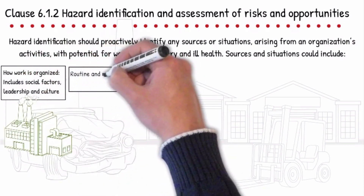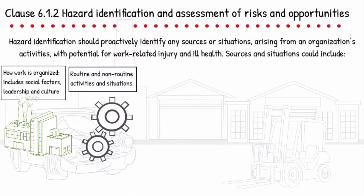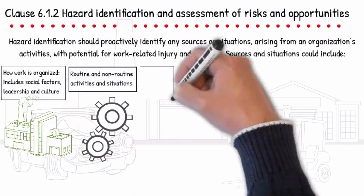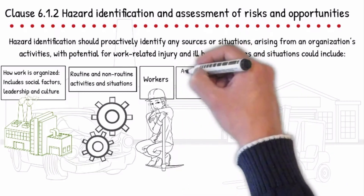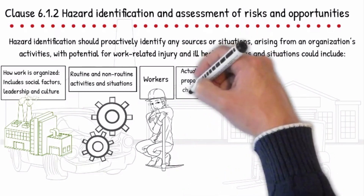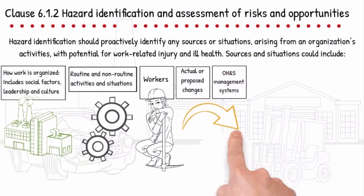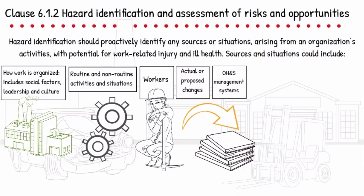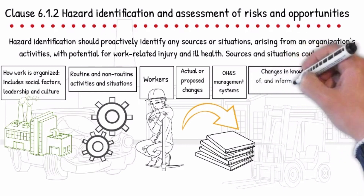Sources and situations also include the routine and non-routine activities and situations, including infrastructure, equipment, materials, substances and physical conditions in the workplace; hazards created in the vicinity of the workplace by work-related activities; changes or proposed changes in the organization or its activities; modifications to the OH&S management system, including temporary changes and their impact on operations, processes and activities; and changes in knowledge and information about hazards.